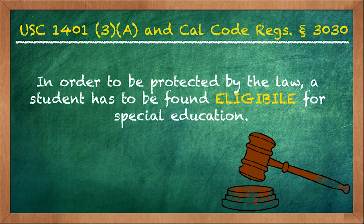IDEA, as a law, is meant to remedy those big picture problems. But before a student is able to fall under the protection of the law, they must be eligible for those protections. So let's begin with the discussion of the law. In order to be protected by the law, a student has to be found eligible for special education. For our purposes today, it means that the student meets three different prongs of the test.